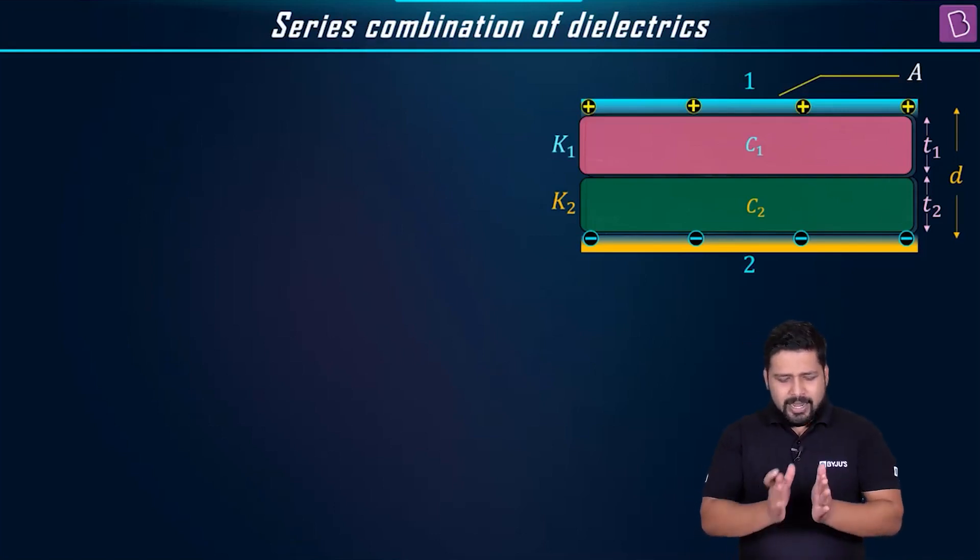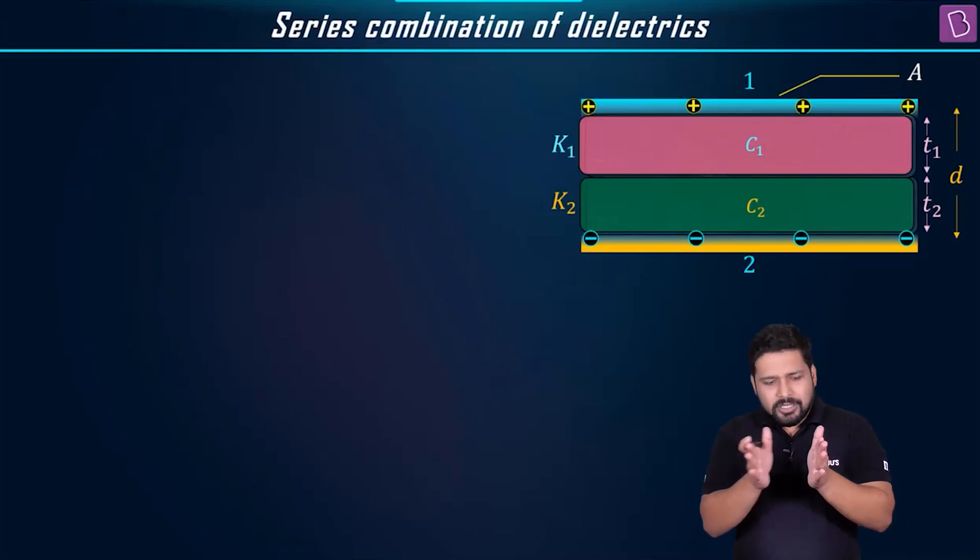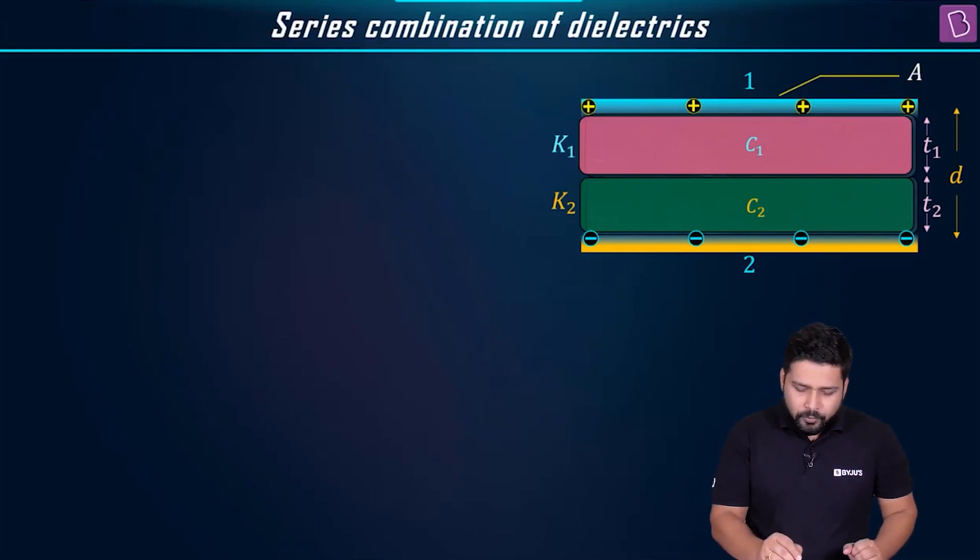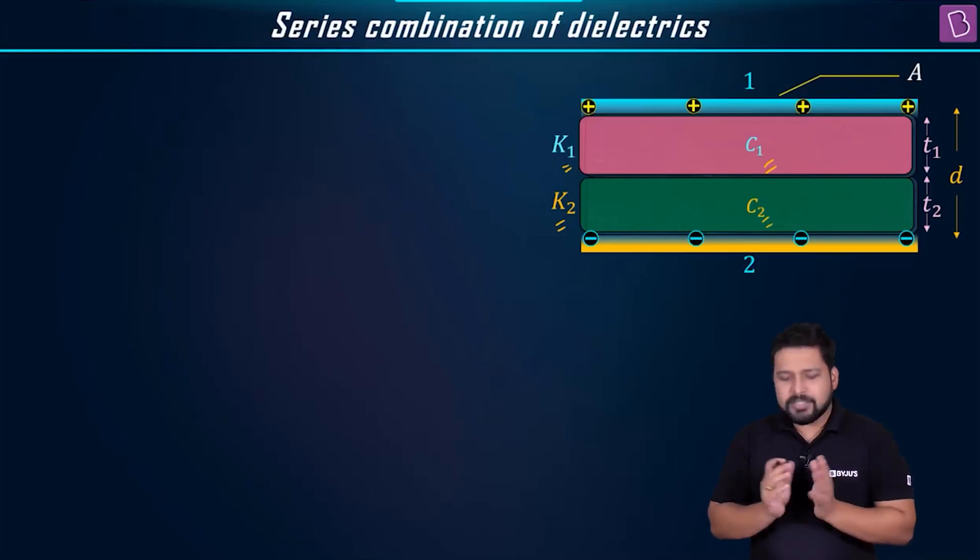In this particular case, the entire region is filled with the dielectrics k2 and k1 having the dielectric constant, capacitances c1 and c2, and thicknesses t1 and t2. The distance between the two plates was d, and now you can see that this distance is being covered some part by the dielectric having dielectric constant k1.